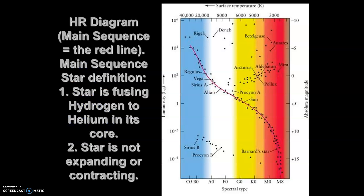This diagram is called an HR diagram — this is going to be a really important one. A main sequence is something we are going to be talking about; it is found right on the red line that comes down through this graph. A main sequence star is one that is fusing hydrogen and helium in its core, and the star is not expanding or contracting. Our Sun is currently a main sequence star.